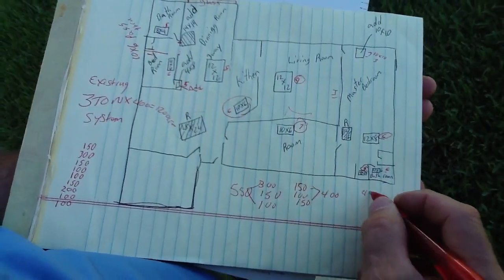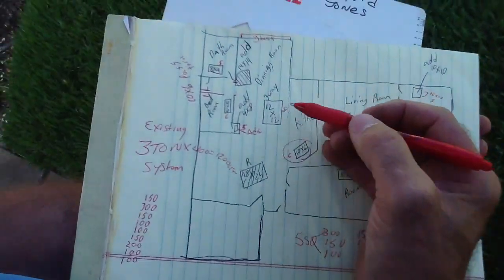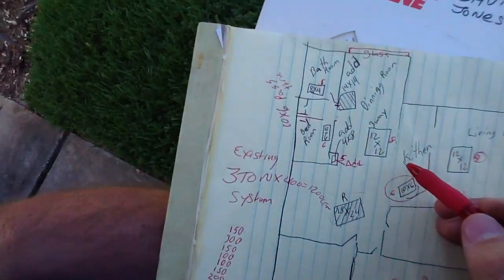Now I'm at 400, 550, I'm just trying to keep track of my CFMs here. Now I'm in the dining room section of the house.